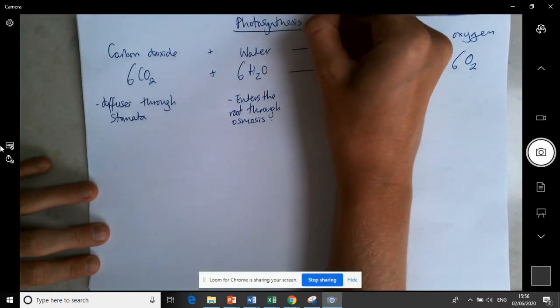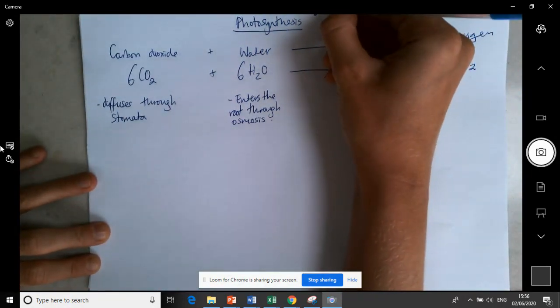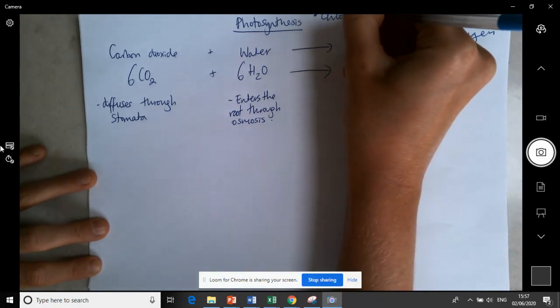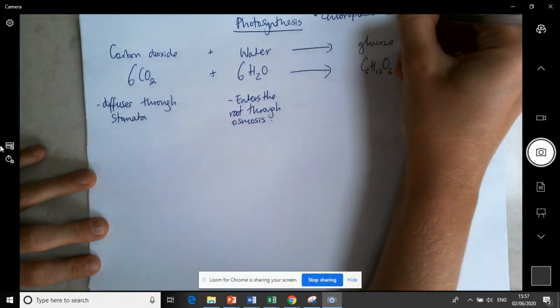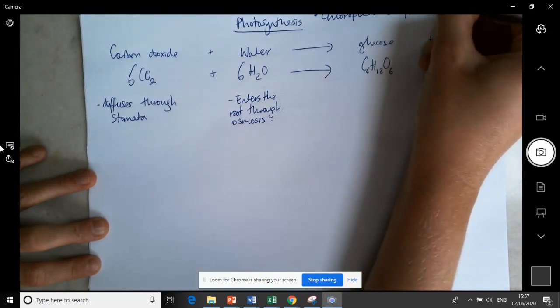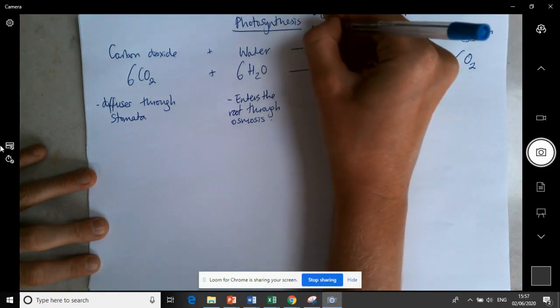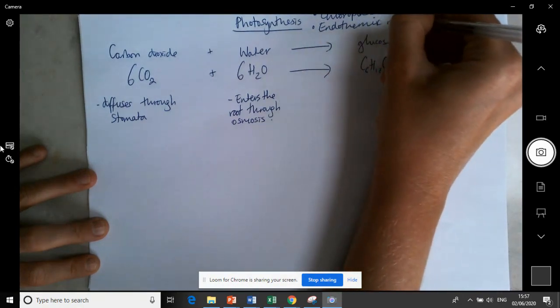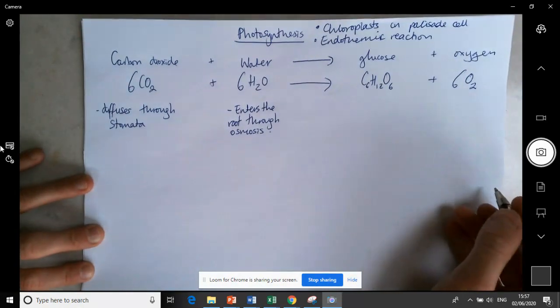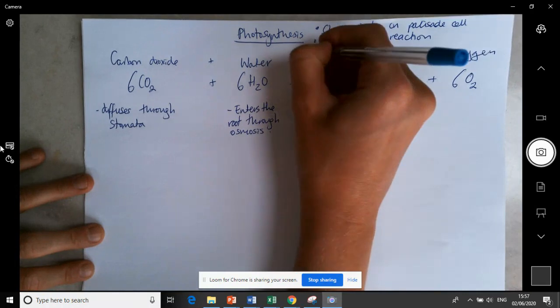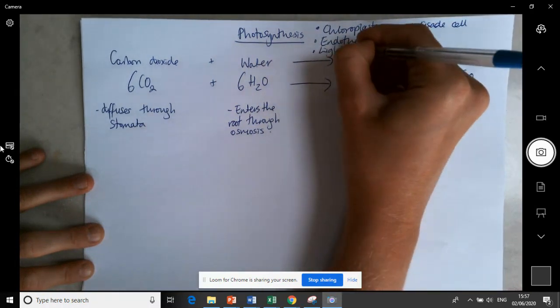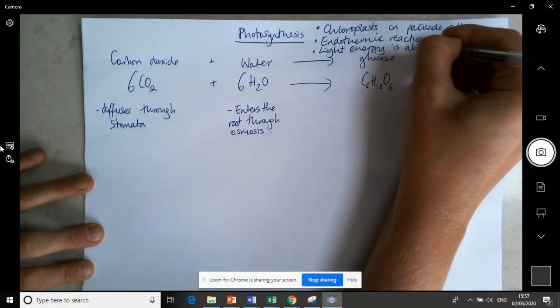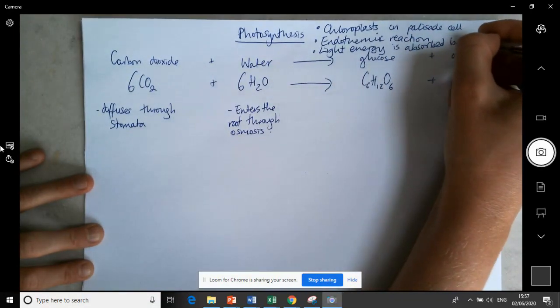We need to know some other key facts. We need to know where it takes place - in the chloroplasts, in palisade cells primarily. We have to know that it is an endothermic reaction. It's taking in energy and the energy it is taking in is light. And the light energy is absorbed by the chlorophyll which is in chloroplasts.